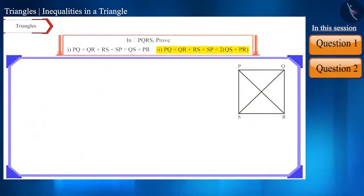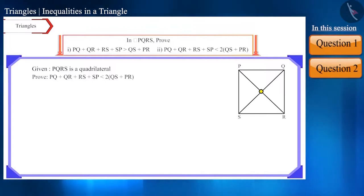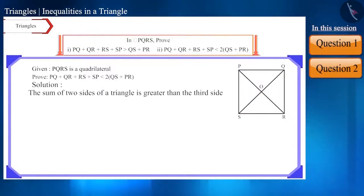Let's move to the second question. Here we have to prove... First, we will name the intersection of the diagonals as O. Friends, if we pay attention here, we have four small triangles: triangle POQ, triangle QOR, triangle ROS, and triangle SOP. We know that the sum of any two sides of a triangle is greater than the third side.